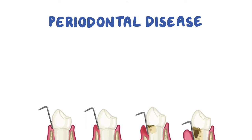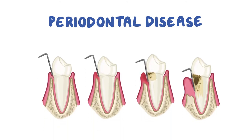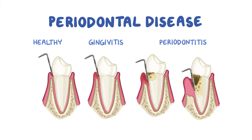Periodontal disease refers to a group of inflammatory conditions that affect the tissues around the teeth. The mildest form of periodontal disease is gingivitis. If left untreated, gingivitis can progress to periodontitis, which is associated with destruction of the supporting structures around the teeth.